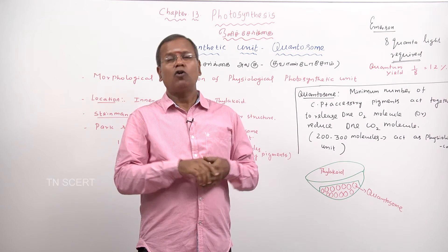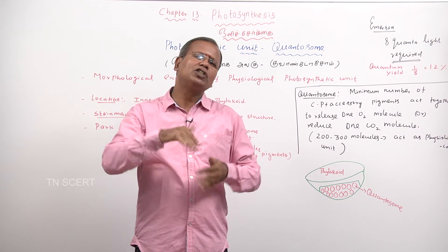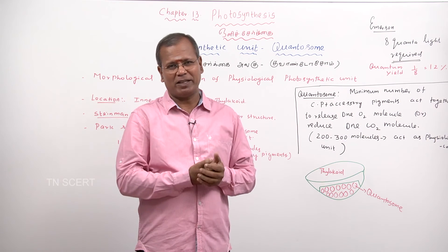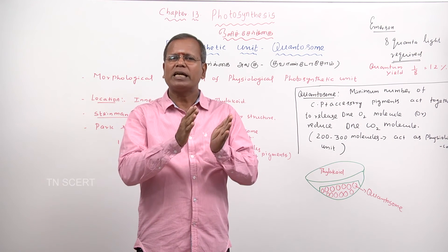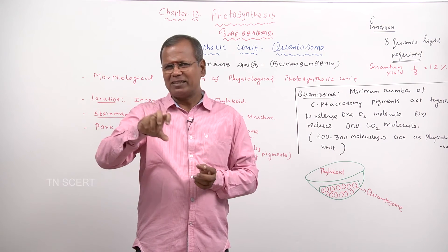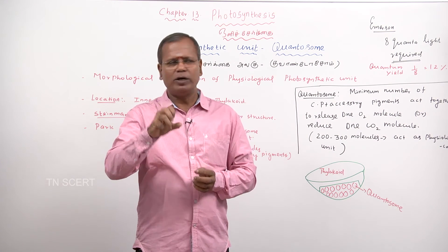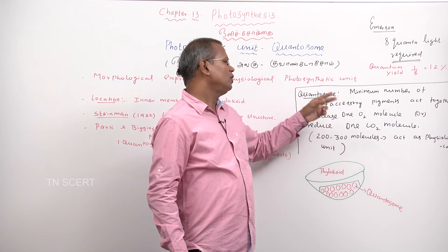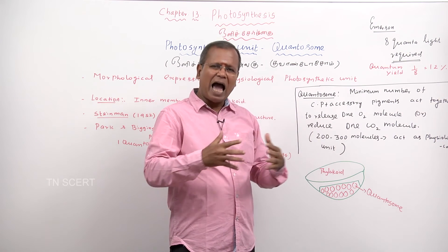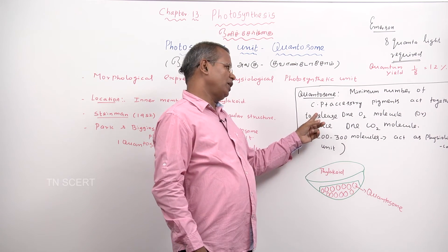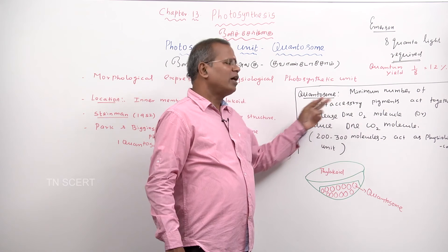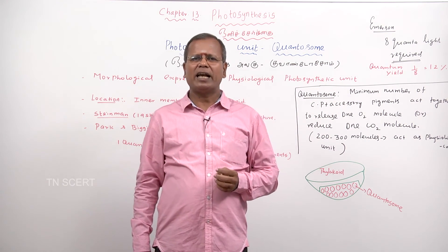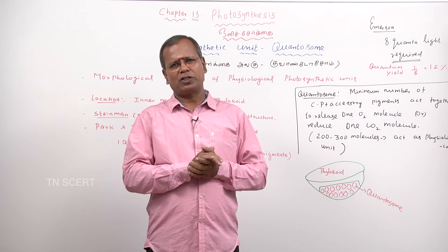By definition, the minimum number of chlorophyll plus accessory pigments required to release one molecule of oxygen or reduce one molecule of carbon dioxide — this structural, functional, and physiological unit is called quantosome. Minimum number of chlorophyll plus accessory pigments act together to release one molecule of oxygen or reduce one molecule of carbon dioxide — is said to be quantosome.